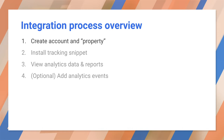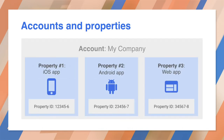I want to say a bit more about properties. An account has properties that represent individual collections of data. These properties have property IDs, also called tracking IDs, that identify them to Google Analytics. If an account represents a company, one property in that account might represent the company's website, while another property might represent the company's mobile app. If you only have one app, the simplest scenario is to create a single Google Analytics account and add a single property to that account.